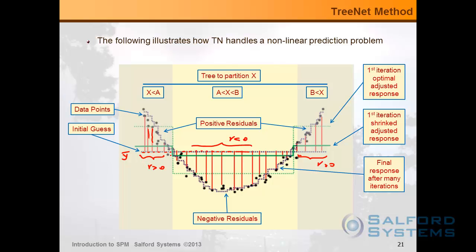If I can automatically find the best way to partition my data range into regions where residuals tend to be positive and regions where they tend to be negative, then I can take my original response and adjust it upwards where residuals are positive and downwards where residuals are negative. Once I have done this adjustment, there are also measures taken to prevent very large deviations — the concept of learning rate shrinkage. I'm skipping fine details here because they would take another hour to cover the solid statistical and probabilistic foundation of the TreeNet algorithm.